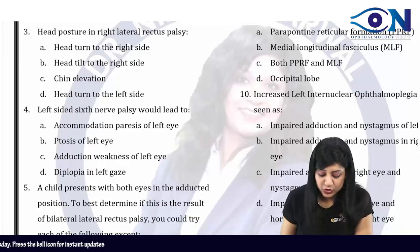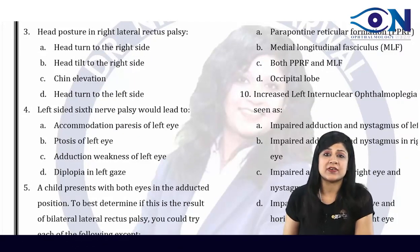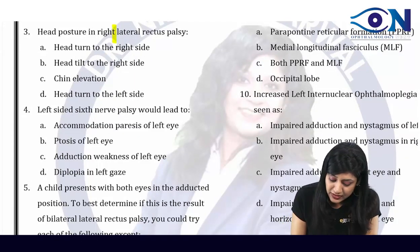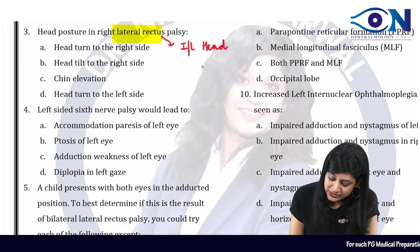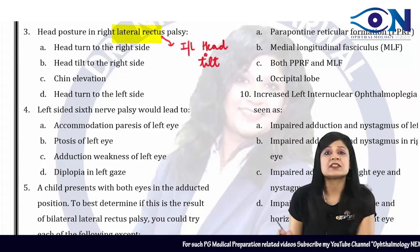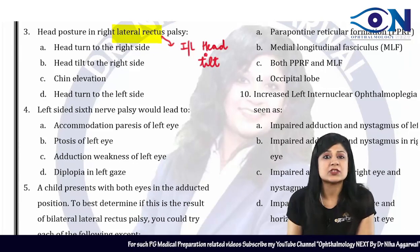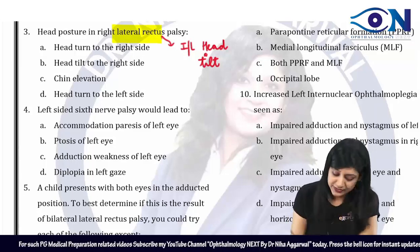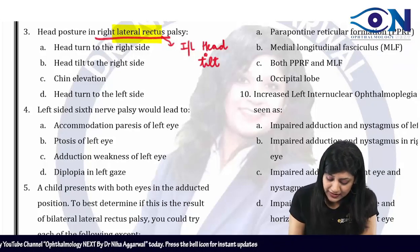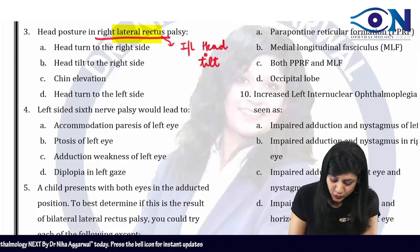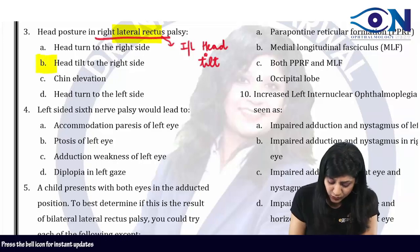Coming to question number 3: head posture in right lateral rectus palsy. So in cases of lateral rectus, we will have the ipsilateral head tilt. It is ipsilateral in cases of lateral rectus, and in the cases of obliques it will be the opposite side. So if it is right lateral rectus, it will be head tilt towards the right side.